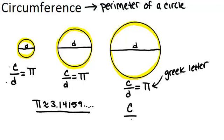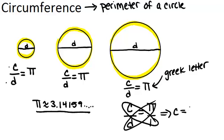So because circumference divided by diameter always equals pi, if I cross multiply this, I get that circumference equals pi times diameter. And this will always be true. And this is the typical formula that you will see for computing circumference.